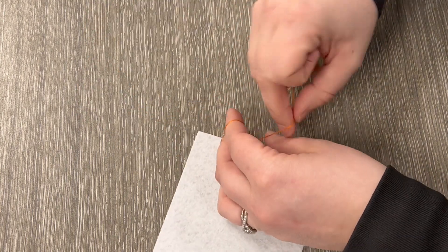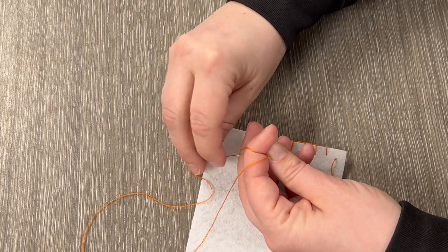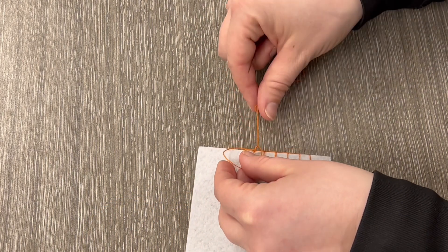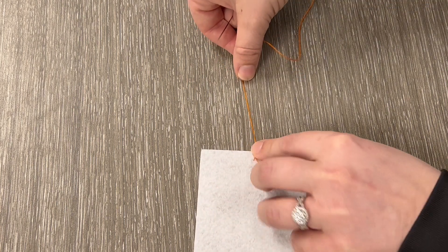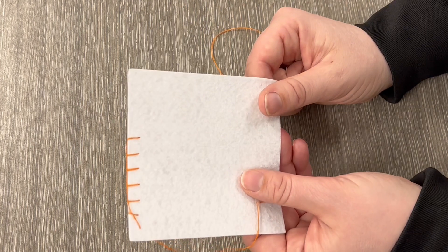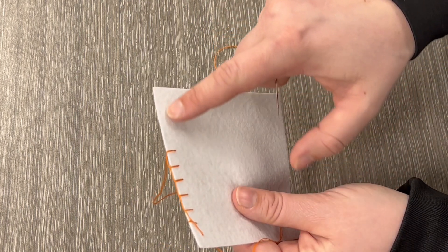...tie a loop, use the needle to pull it through, and then bring that knot right on down and push it right there. That's going to keep it nice and secure.